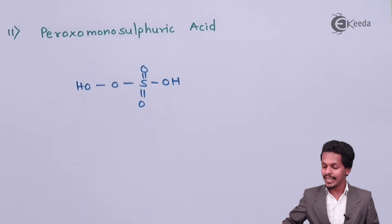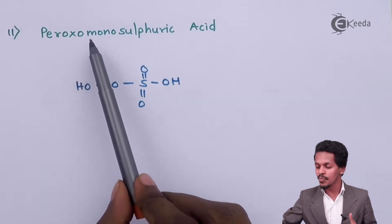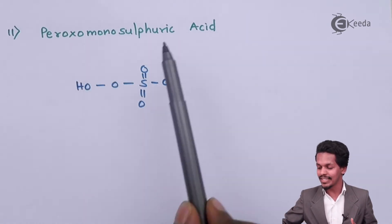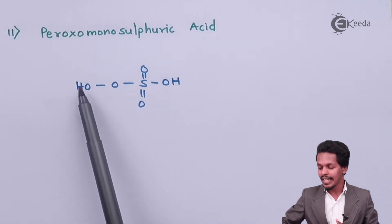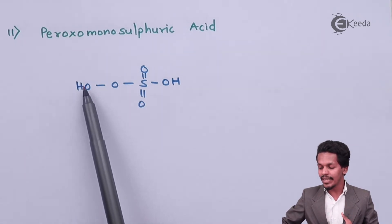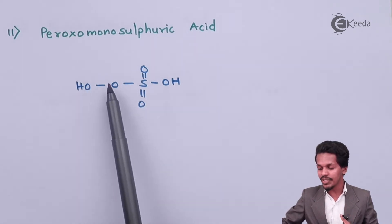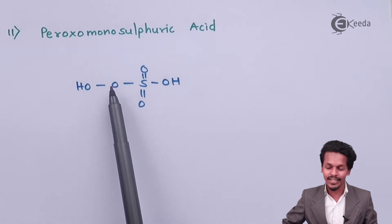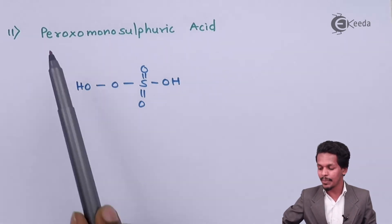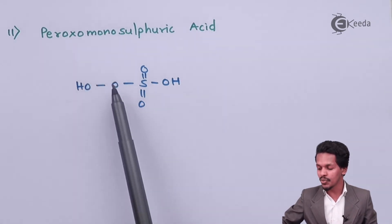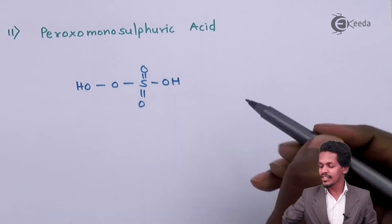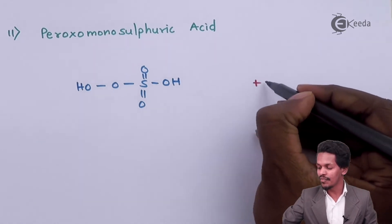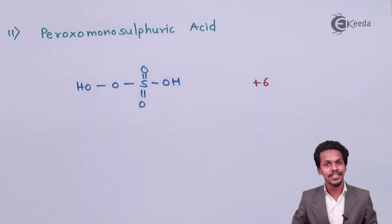The next is peroxomonosulfuric acid, which is similar to sulfuric acid. The difference is that instead of having only an OH group, there is an additional oxygen atom attached to it. The oxidation state of sulfur is +6.